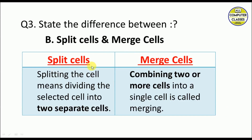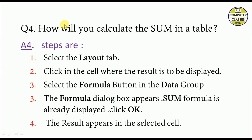What is the difference between split cells and merge cells? Splitting means dividing the selected cell into two separate cells. Merging means combining two or more cells into a single cell.